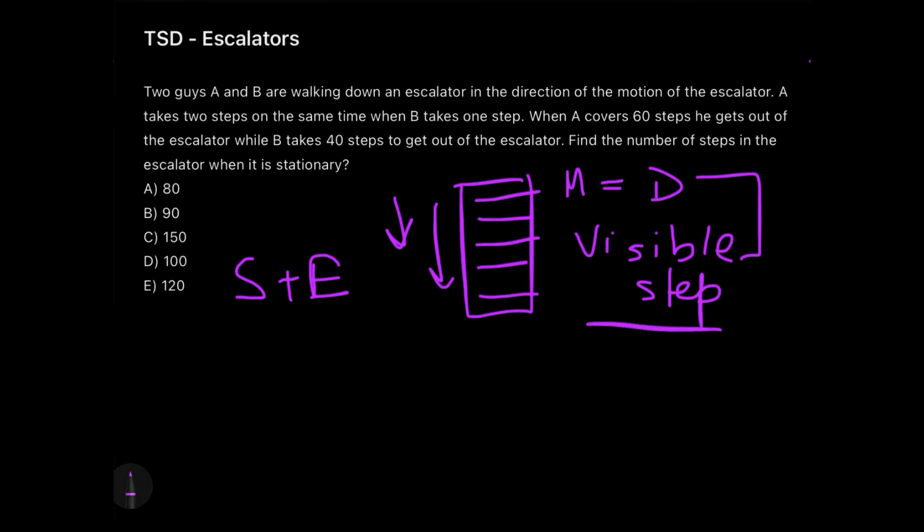That will together add up and make it as the sum of the visible steps which are there on the escalator. Similarly, imagine another scenario where the escalator is going up but you are traveling down. Of course, you will take more steps than the actual visible steps on the escalator, and that would mean that the steps you have taken minus the steps which are in the escalator would give you the effective or visible steps of the escalator.